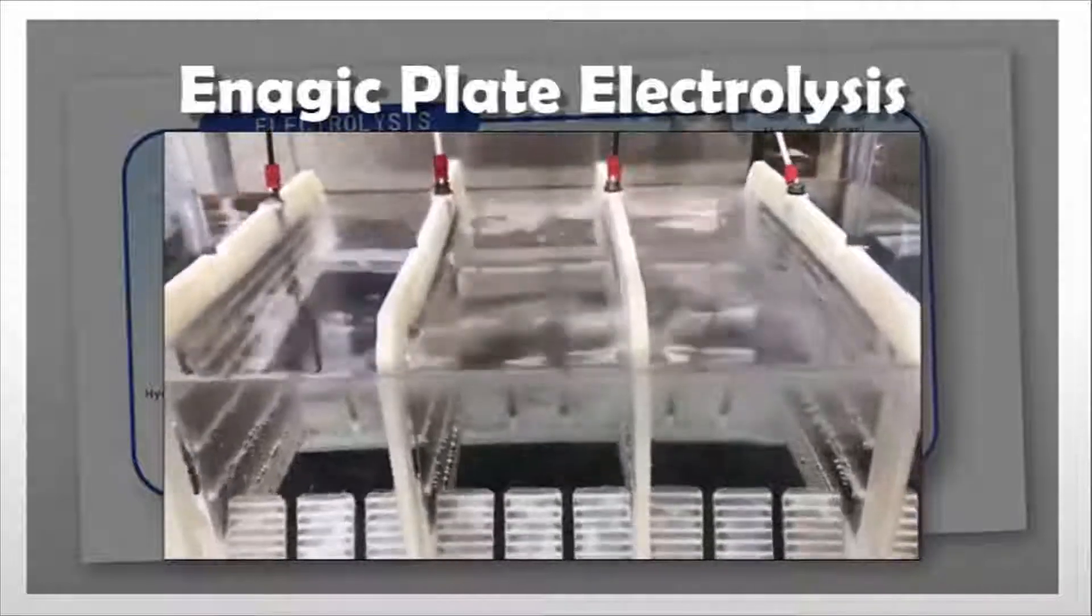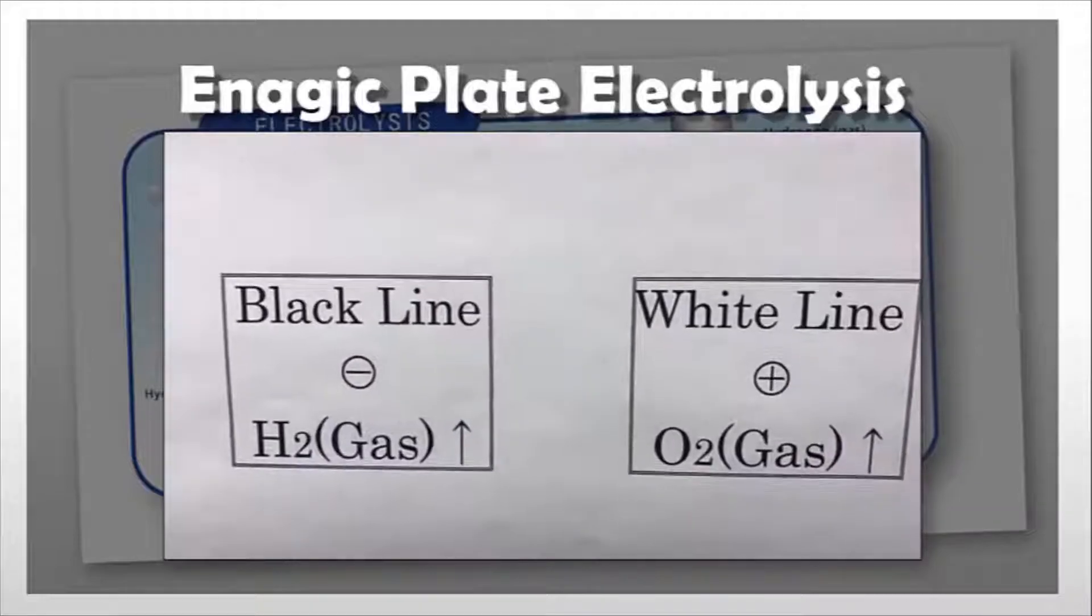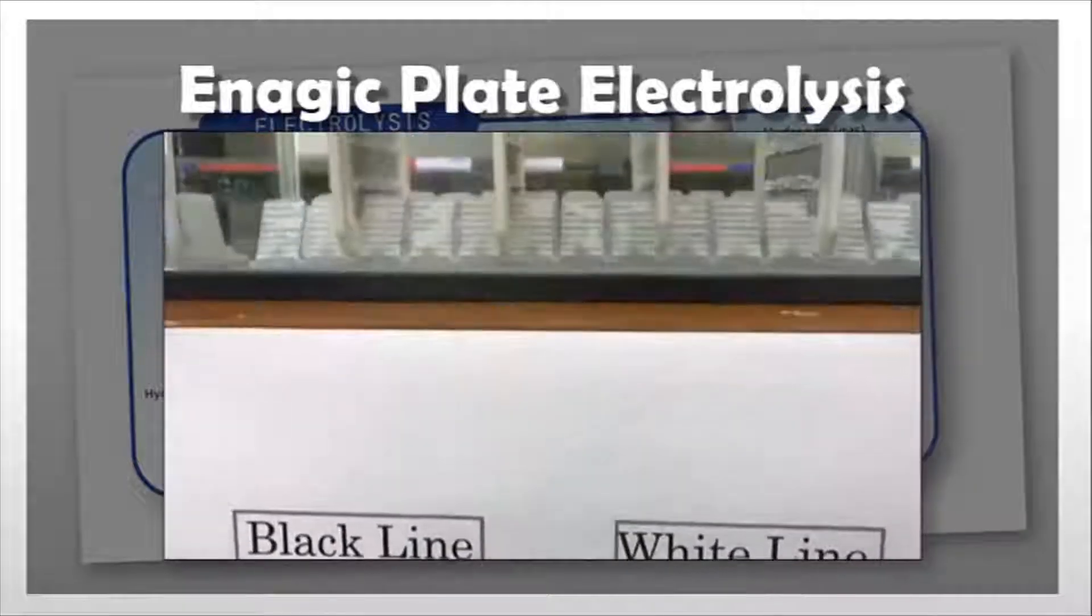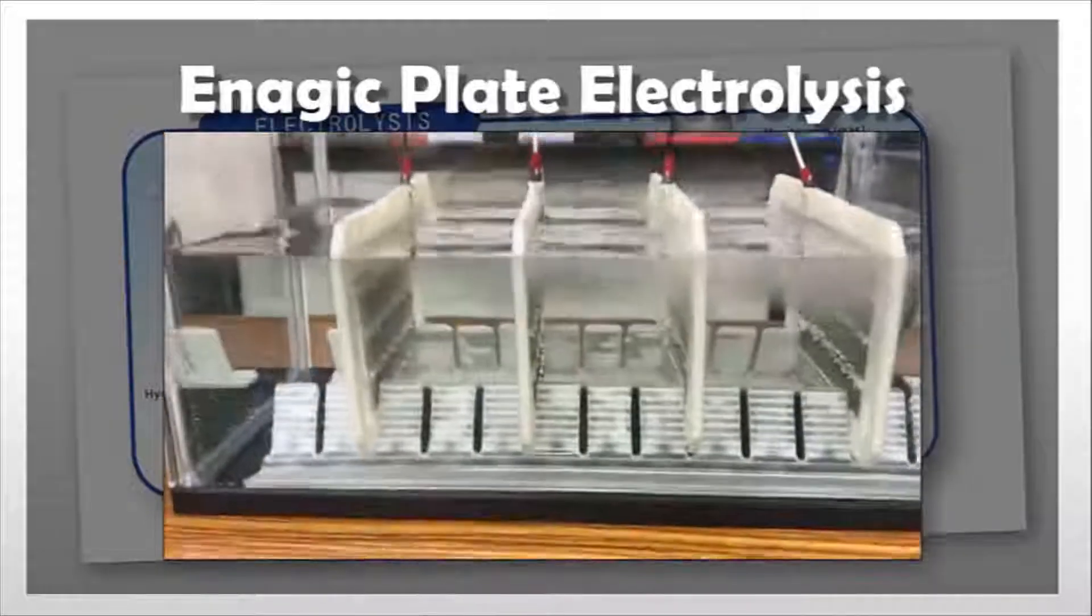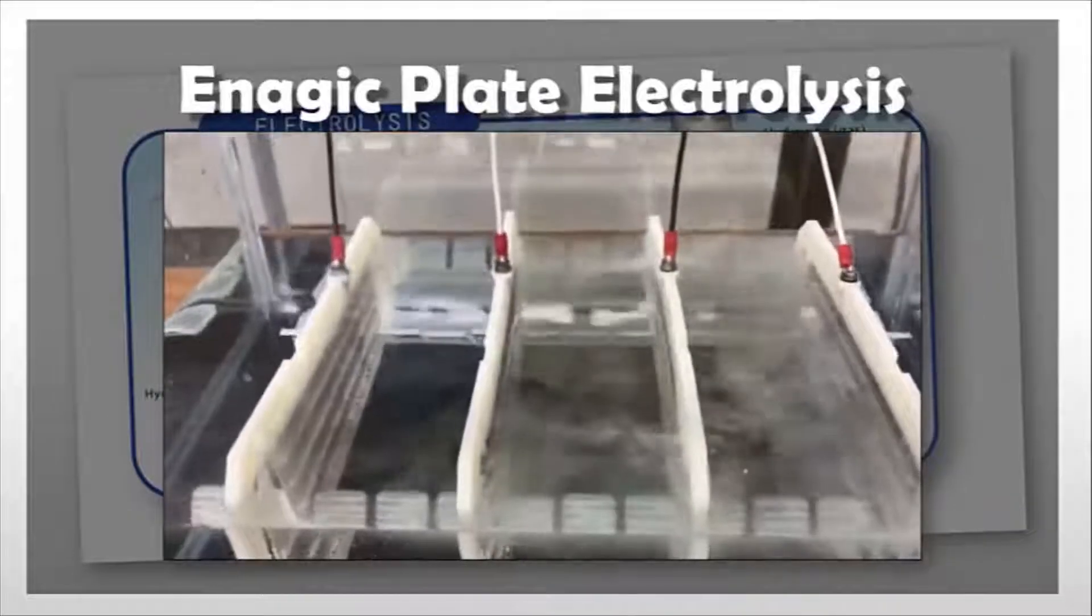You could see the actual bubbles coming off, a gas being created. So the black line is H2 gas, the white line is the oxygen gas. As we see it again, you could see through that—it's just amazing, amazing hydrogen being produced.